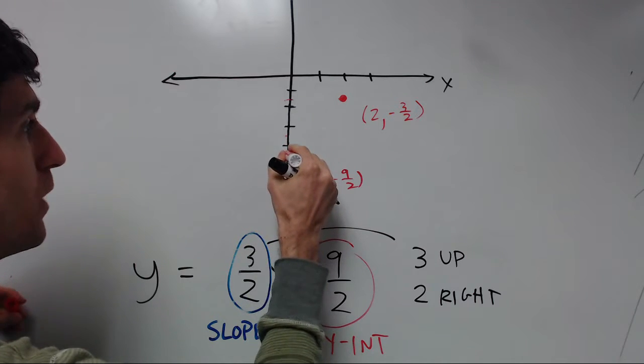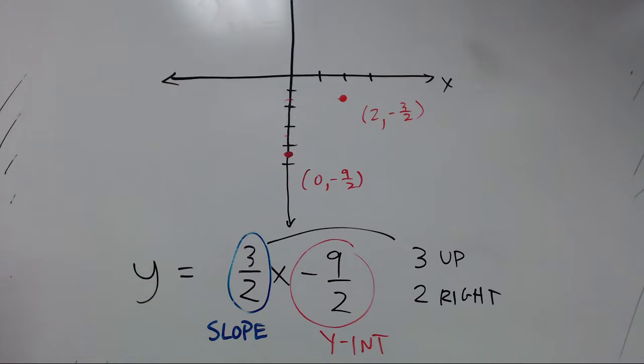Okay, now we've got two points. We're ready to connect the dots with a straight line. So ideally we'd use a straight edge. If you're doing this on paper, you're going to use a ruler.